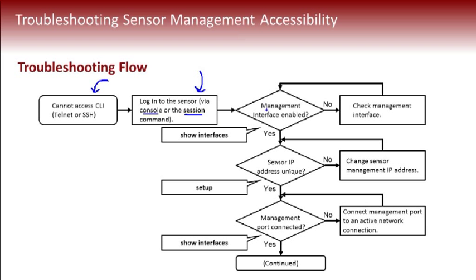Next, ensure that the management interface you're trying to reach is enabled. Run a show interfaces to confirm the management interface is indeed enabled. If it's not, go and bring up that management interface. If it is enabled, make sure your sensor has a unique IP address — you can confirm this with the setup script or change it directly at the sensor command line.